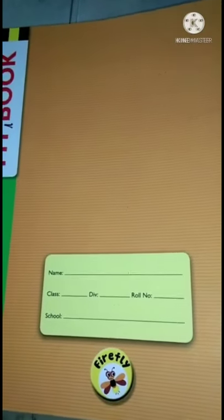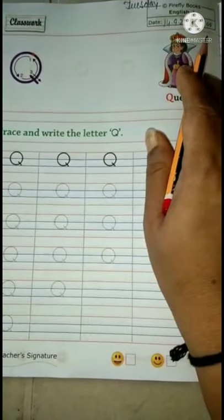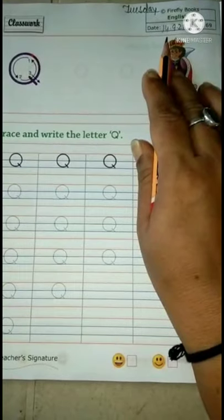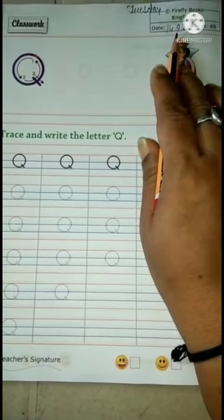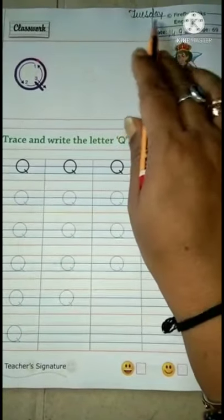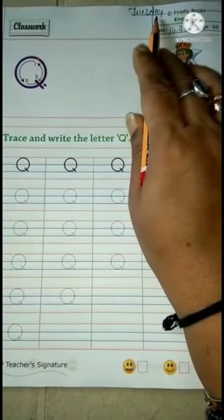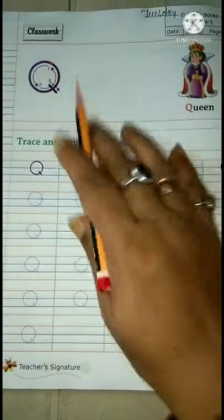Good morning, Jay Swami Narayan. In the skill book on page number 69, write down the date first. It is 14th September 21, 14-9-21. Okay, Tuesday, T-U-E-S-D-A-Y, Tuesday.